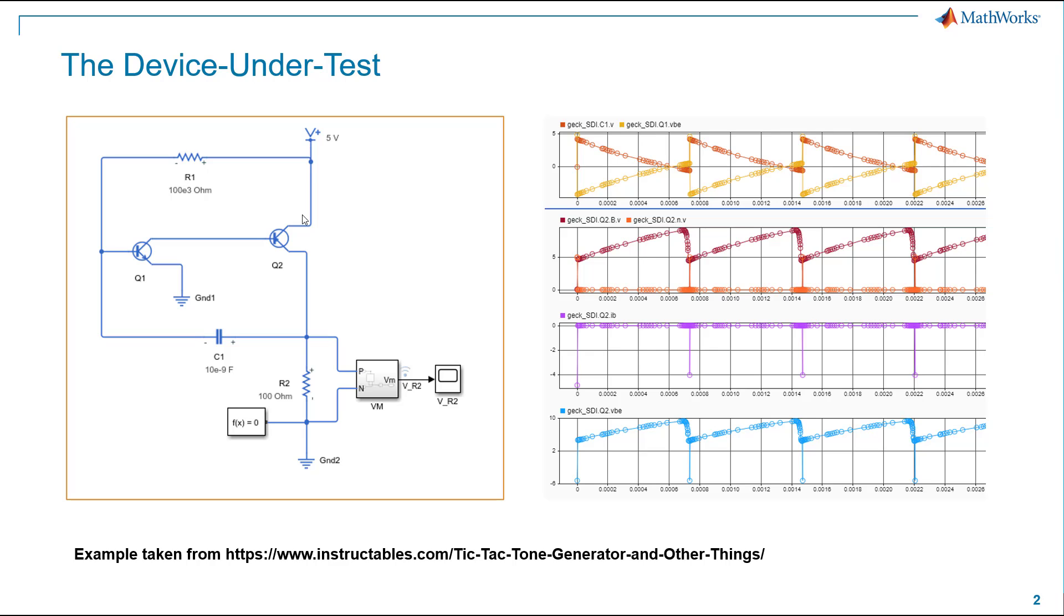So here's our device under test. As I said, it's consistent of two transistors, an NPN and a PNP BJT. They are connected by way of one's collector to the other's base, and then they're also connected by a couple passive components, R1 and C1, as you can see here.